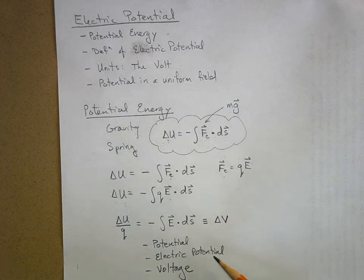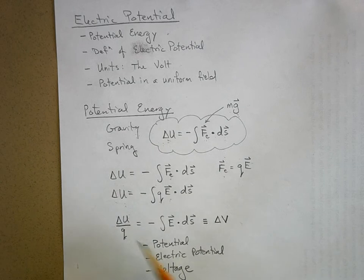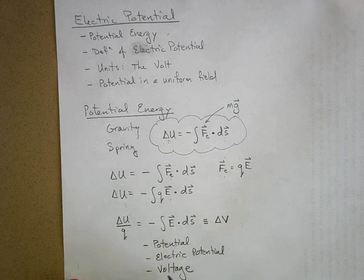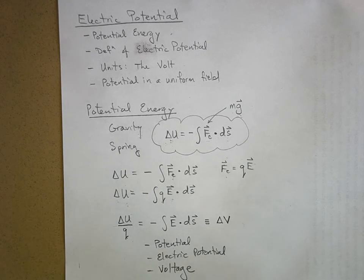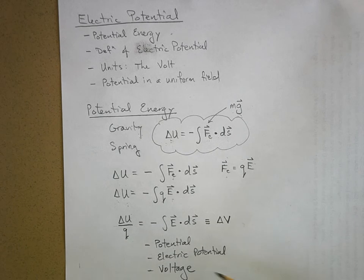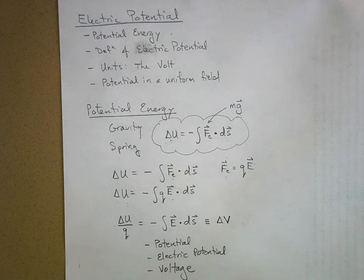A change in potential, a change in electric potential, and a change in voltage are used interchangeably. Usually when we're dealing with an electrostatic condition — which is what we're studying right now — we'll use 'potential' or 'electric potential.' When we get to currents, we more often talk about 'voltage.'